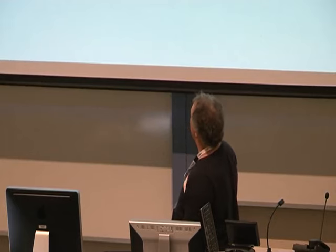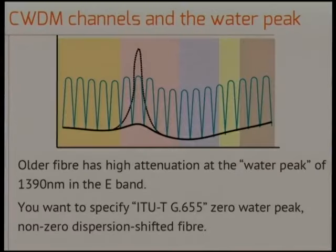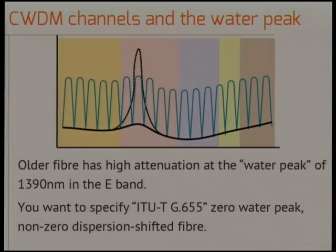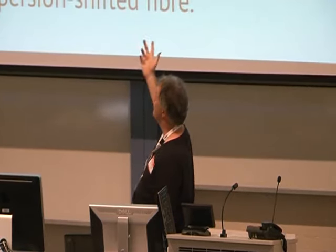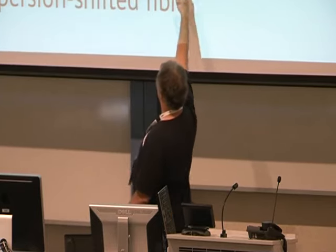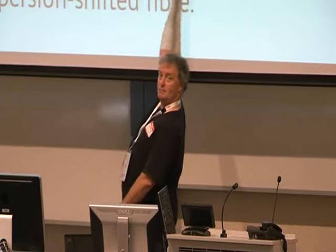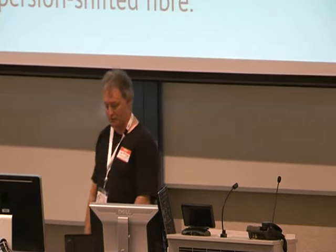Some optical fibre has this water peak attenuation, and before you deploy your CWDM system you need to find out what sort of fibre you have in the ground. This is where record keeping for fibre systems is really important. When somebody installs a fibre system they give you a stack of documentation — file that and don't lose it, because in ten years time when you want to use that fibre for this sort of system, you can go 'oh, how lucky we bought the right sort of fibre.'